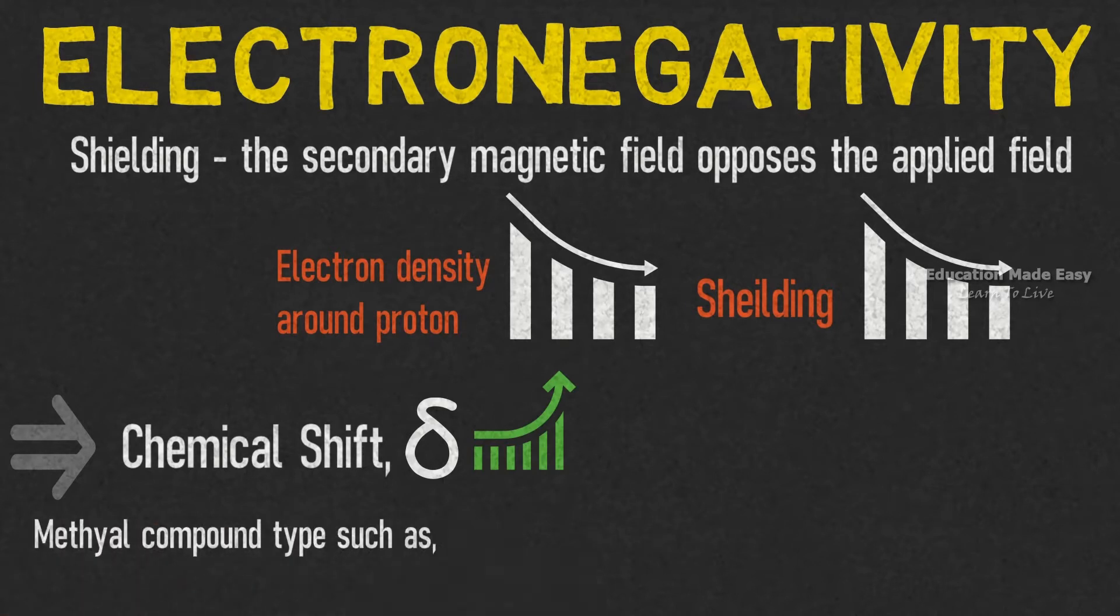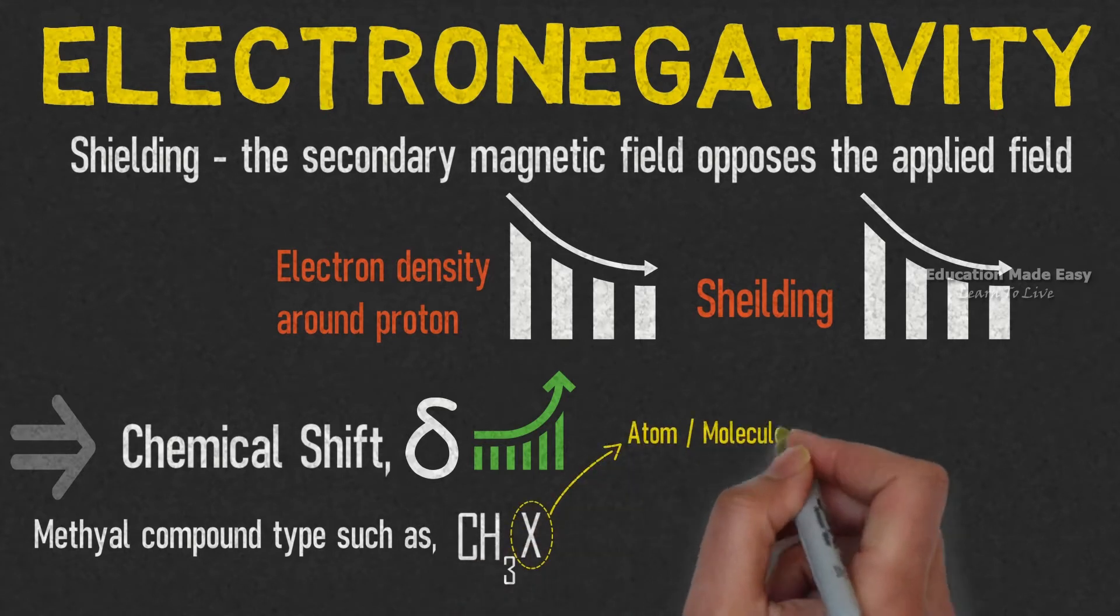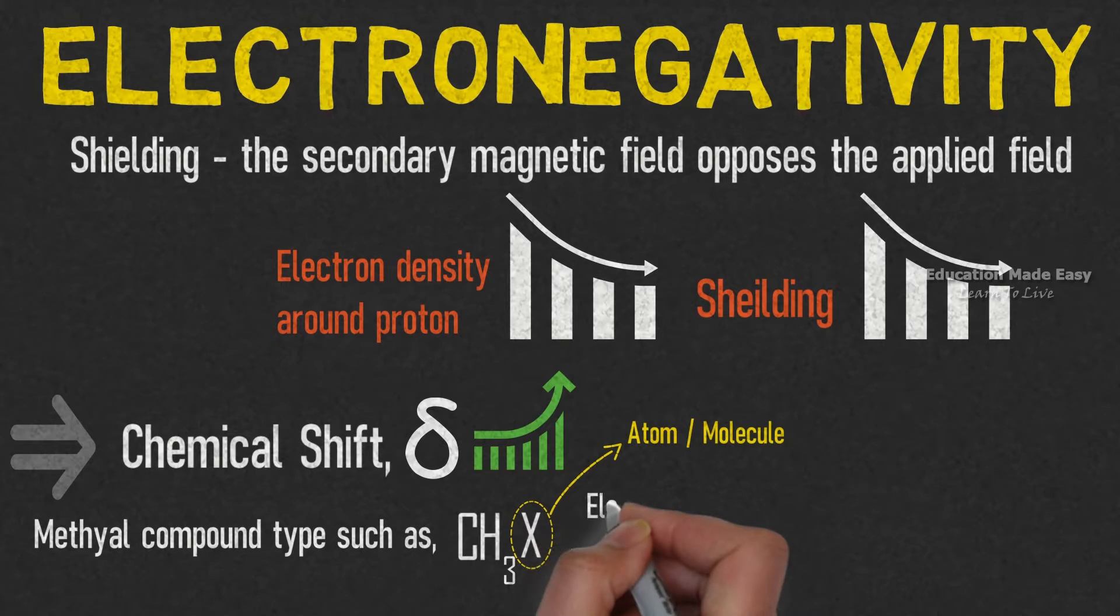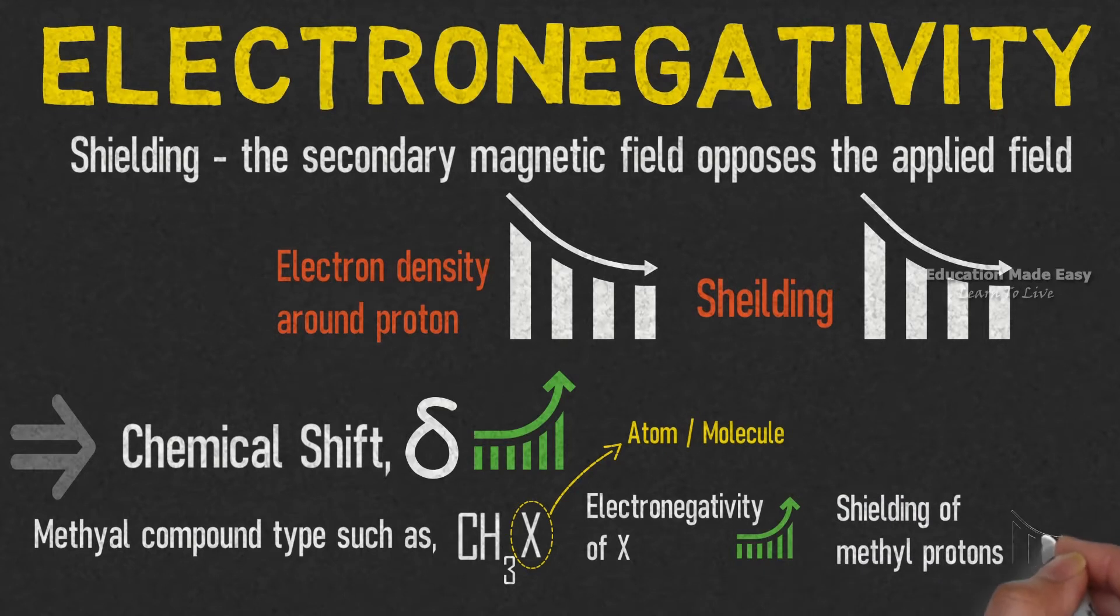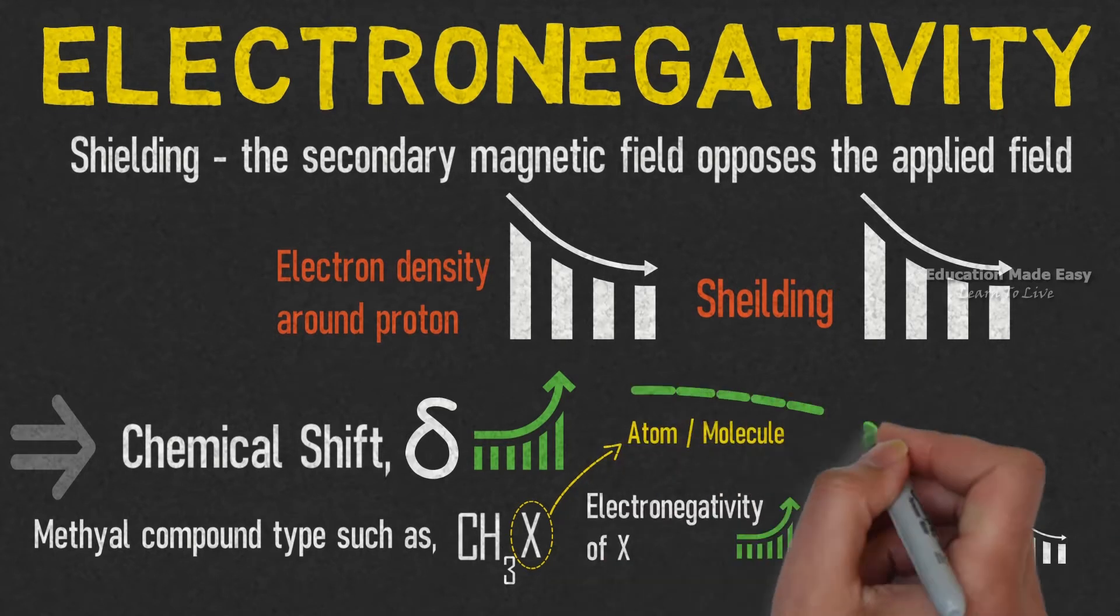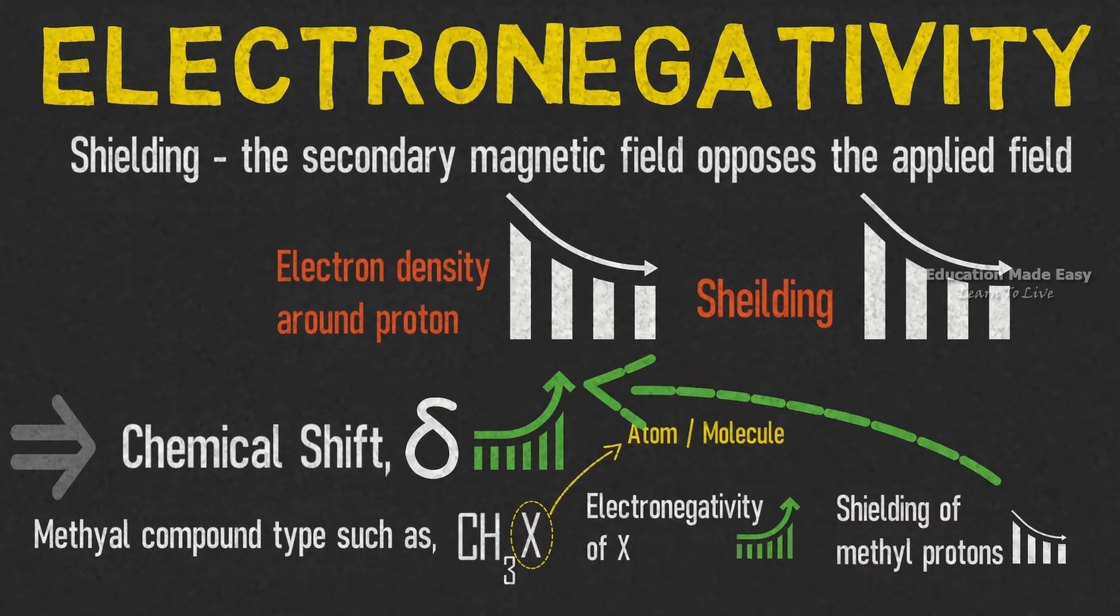For better understanding, consider methyl compound type such as CH3X, where X represents an atom or a molecule. When the electronegativity of X increases, the shielding of methyl protons decreases. As the shielding of methyl protons decreases, chemical shift small delta increases.